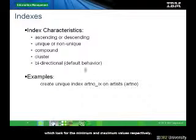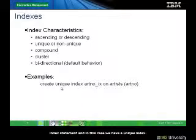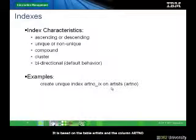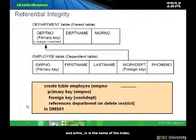Bidirectional traversal is good for functions such as MIN and MAX, which look for the minimum and maximum values respectively. Below is an example of how you can create an index using the CREATE INDEX statement. In this case, we have a unique index based on the table artist and the column art_name. art_name_ix is the name of the index.